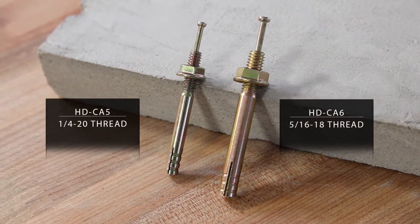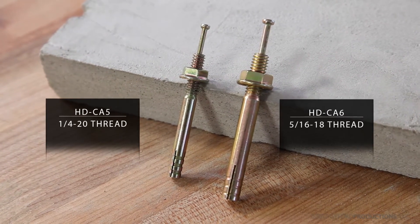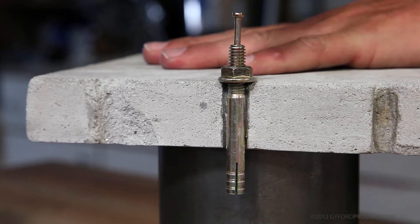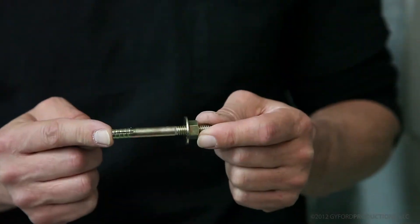The HDCA5 and HDCA6 are pin drive anchors. They are secured in the hole by hammering this pin, which expands these fingers apart inside of the hole. These are very strong anchors.